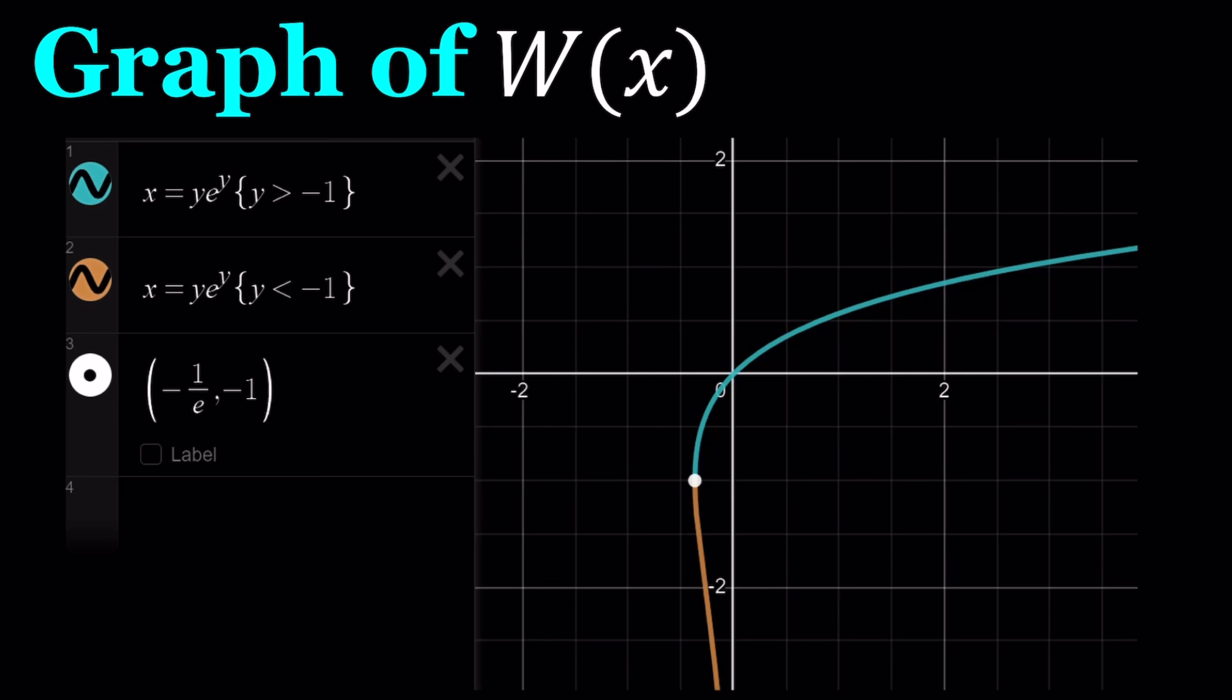So what happens is, if you draw a vertical line at x equals negative 1 over e, you're going to notice that it's actually tangent to this graph. So any x value between negative 1 over e and 0 is going to intersect this graph twice, which will give you more than one value. Anyways, just briefly, I wanted to talk about Lambert's W function and its graph, and now we're going to go ahead and differentiate it.